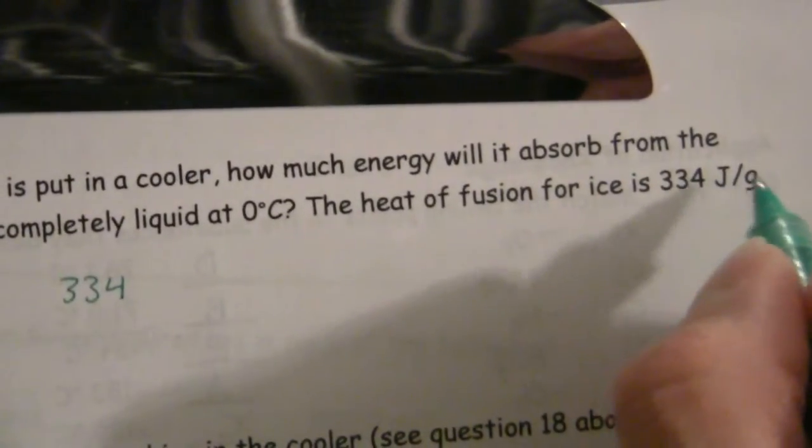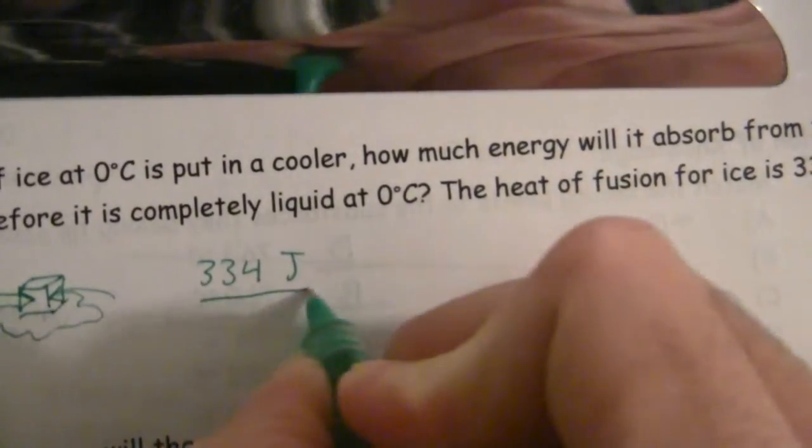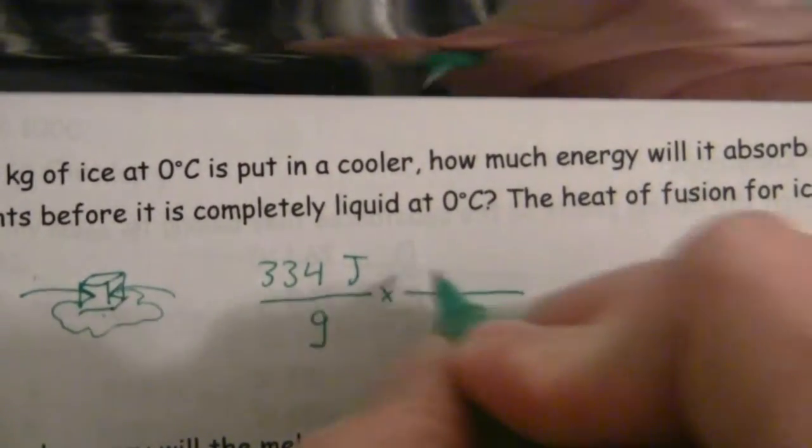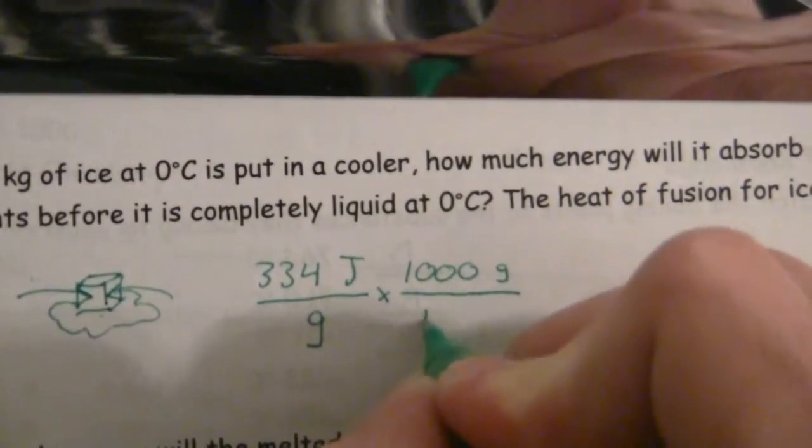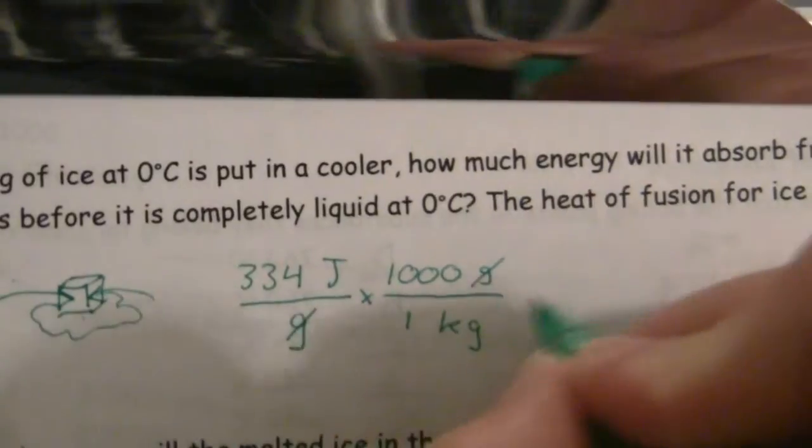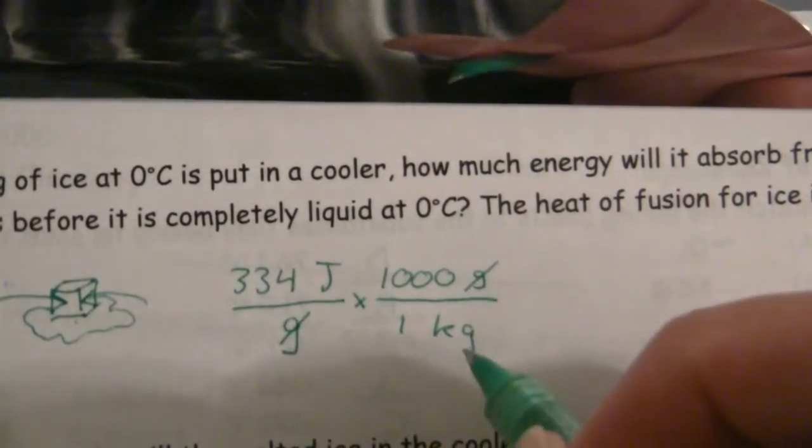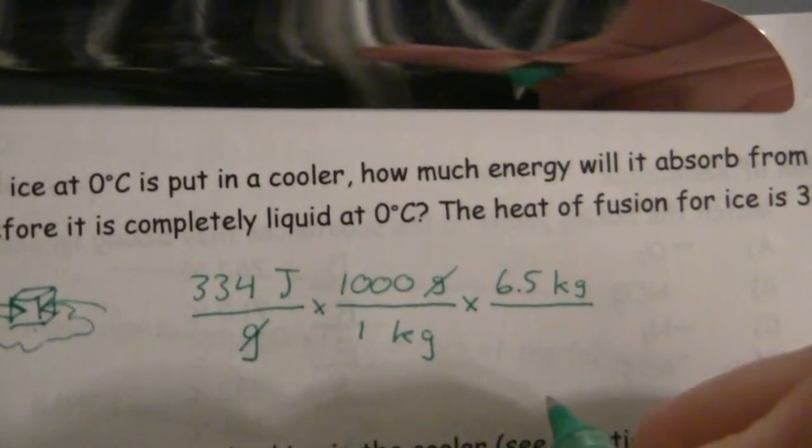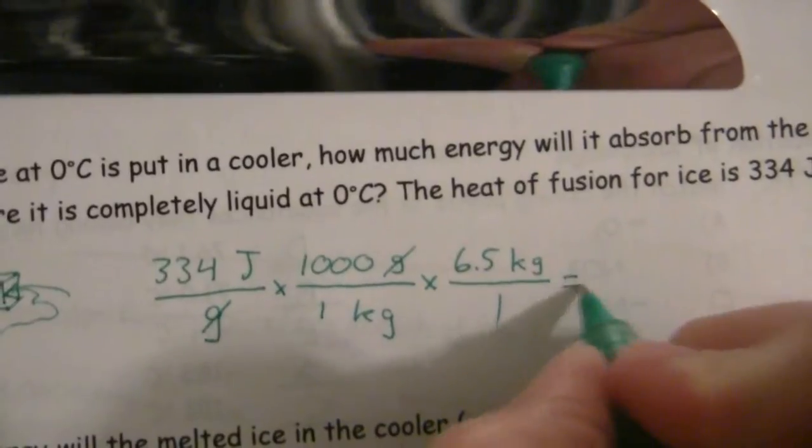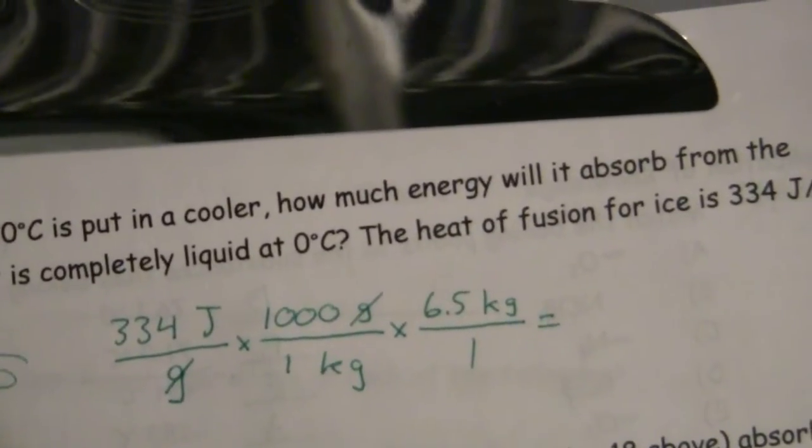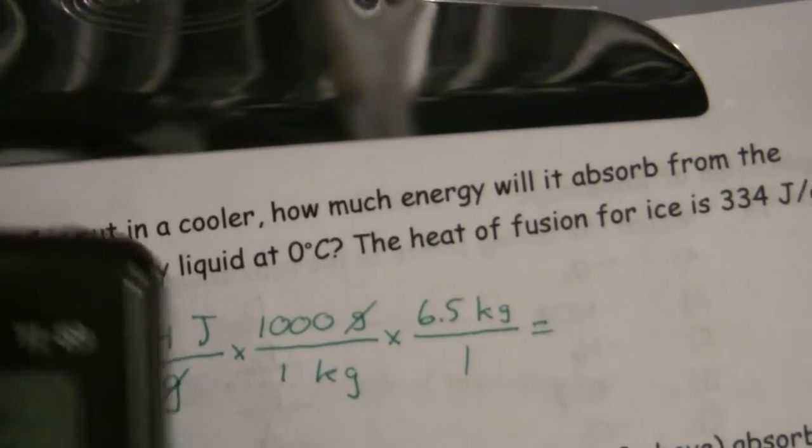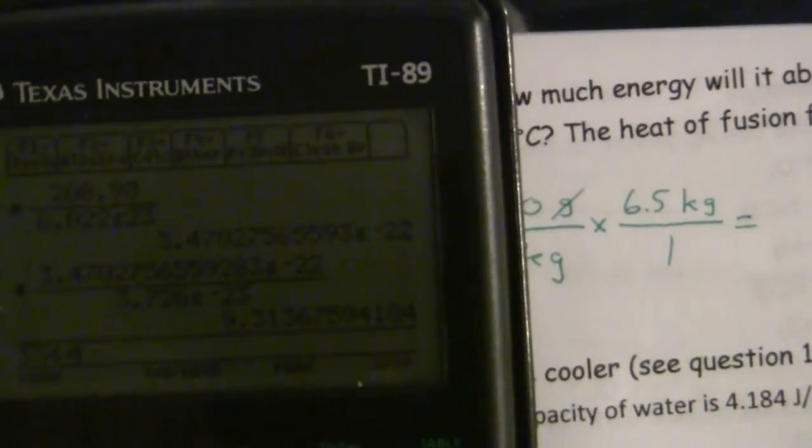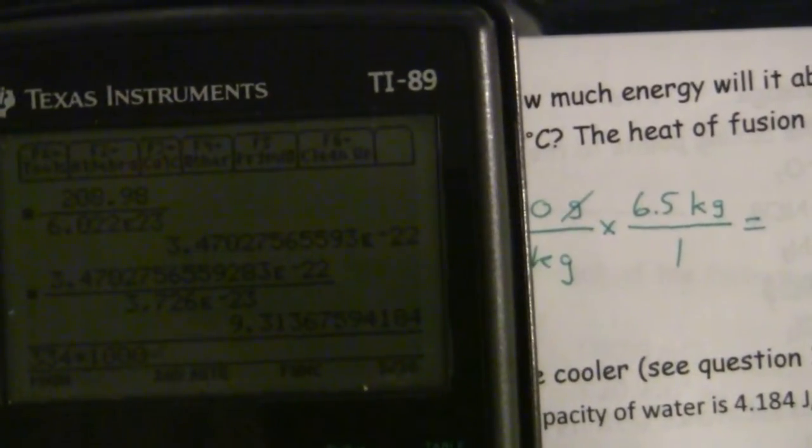334 joules per gram of ice. But we have 6.5 kilograms. So first we can just say there are 1,000 grams to 1 kilogram. Now our grams cancel. And now we find the joules per kilogram of ice. And we have 6.5 kilograms. We can put a 1 there if you want. And that's it. We calculate that out. 334 times 1,000 times 6.5.